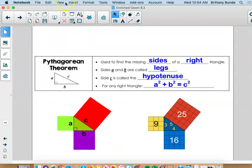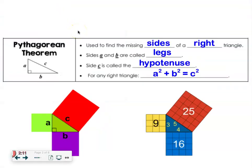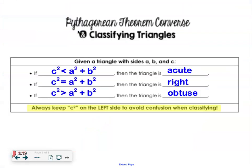But what's really new today to us is the converse of the Pythagorean theorem. So the converse of the Pythagorean theorem will help us classify a triangle as being acute, obtuse, or right.